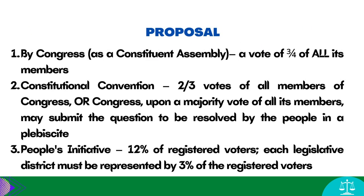What are the three ways of proposing amendments? First, Congress may directly propose amendment or revision by three-fourths votes of all its members. In such a case, Congress will not be acting as a legislative body, but rather as a constituent assembly — a non-legislative function of Congress.